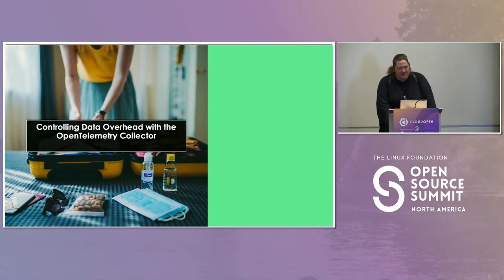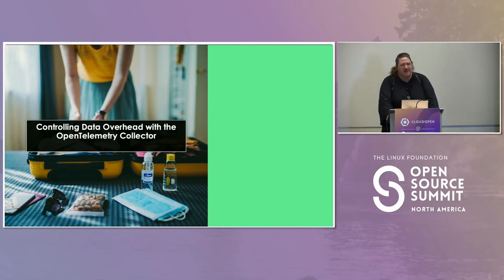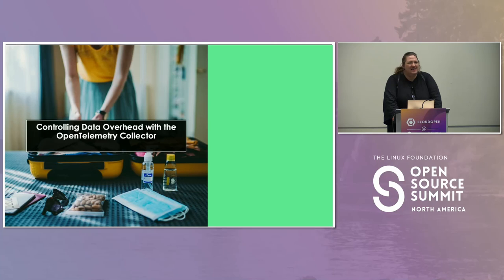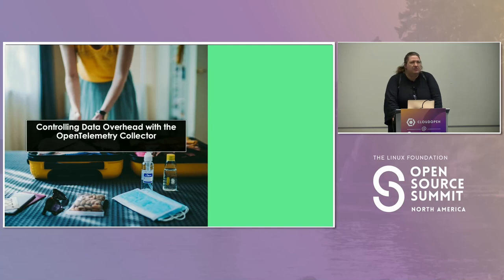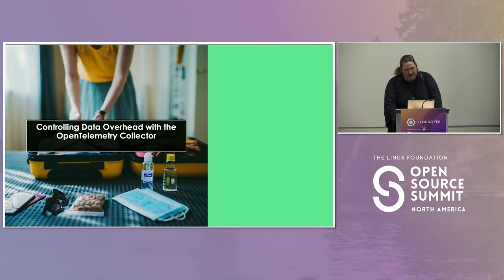So this is 'Controlling Data Overhead with the OpenTelemetry Collector.' There are sort of two possible interpretations of that topic. Is this about controlling the data overhead of your services? But this is largely about success stories from controlling that footprint from your observability tooling — seeing that we have some impact from observability, which is largely inevitable, and then how do you control that. Yesterday I did an intro to OpenTelemetry, and a little bit of that talk got pulled into this one. Apologies if you've seen a couple of these slides before, but we'll be going through it in a new way.